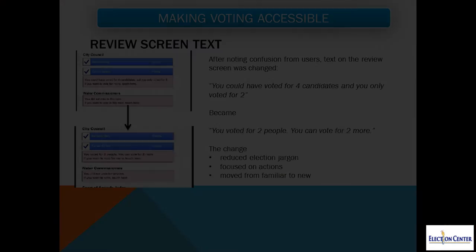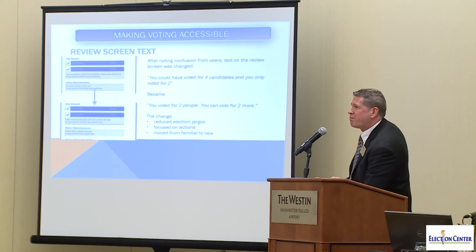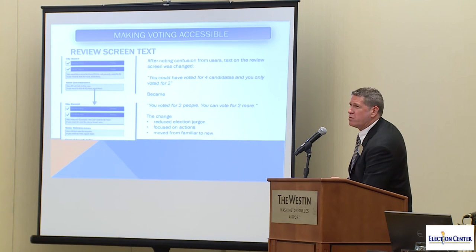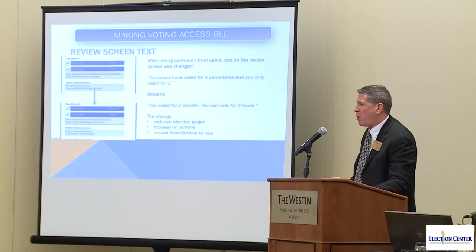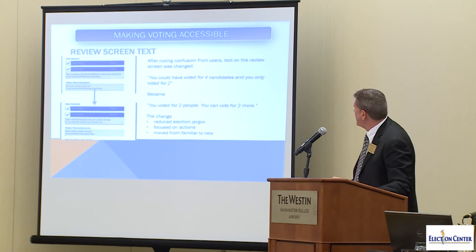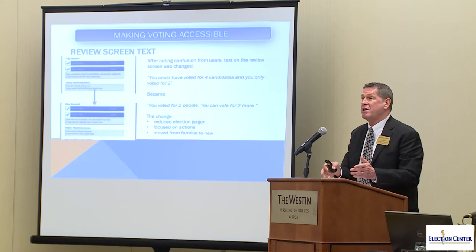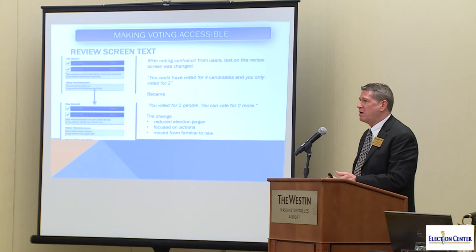Here's another example: the original text said that you could have voted for four candidates and you only voted for two. That was changed to "you voted for two people, you can vote for two more." What they did was reduce the election jargon, focus on actions, and move from the familiar to the new — the familiar was "you voted for two," the new is "you can vote for two more."